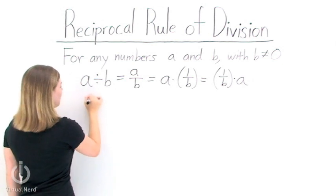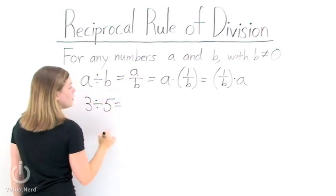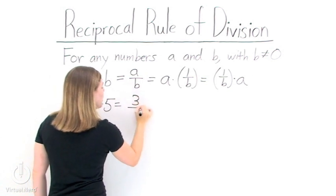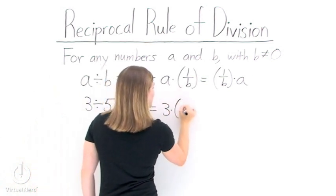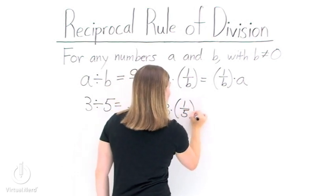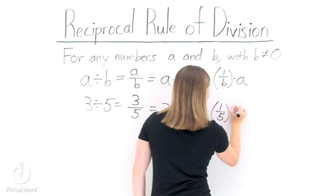Now let's take an example, 3 divided by 5. Using the reciprocal rule of division, we can rewrite this as 3 over 5, or 3 times 1 over 5, or lastly 1 over 5 times 3.